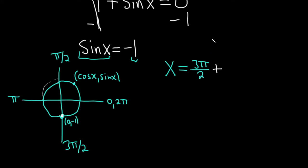So 2 pi times n, where n is the number of times that you add it. And notice that n here could be 0, in which case you just get 3 pi over 2.